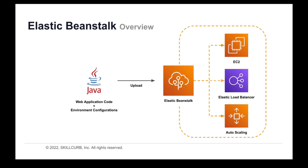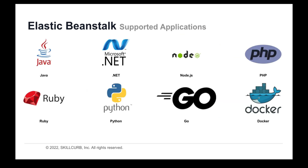This provides a simple, effective, and quick solution to deploying your web applications. The supported development options for Elastic Beanstalk include Java, .NET, Node.js, PHP, Ruby, Python, Go, and Docker.